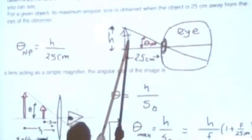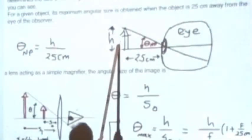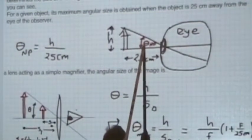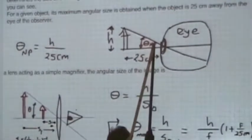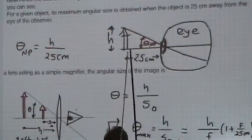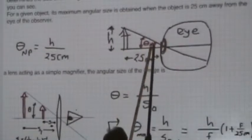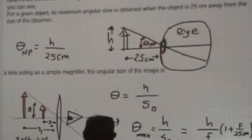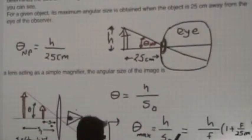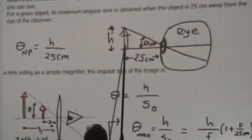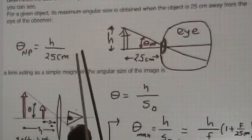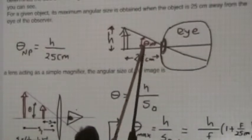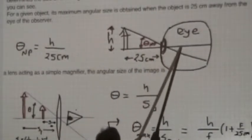If this is the object and you place it at 25 centimeters, it has a height h. The angular size of the object is what we call theta_NP — the near point — when you have placed the object as close as you can to you. That angle determines how big the image of the object is on the retina. If you move the object further back, h is not changing, so the angular size — theta_NP — would get smaller.